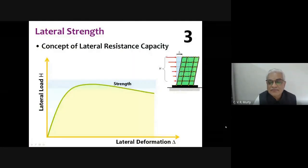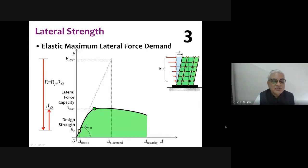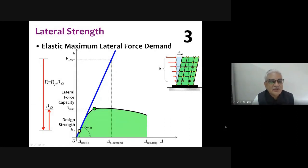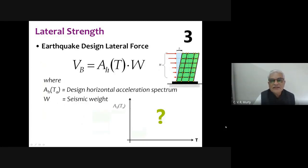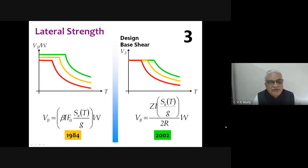The third virtue is strength. The Indian standard introduced the concept of the response reduction factor R. The design force is obtained by performing linear structural analysis and dividing the result by R to get the design force. This is reflected in the expression V_B = A_h × W, where A_h is the horizontal spectral acceleration coefficient and W is the seismic weight. In the 1920s A_h was a constant flat line of 0.1W; in 1962 it was constant up to a certain natural period and then dropped; in 1984 different soil classes were introduced; and in 2002 a unified benchmark was set with the response reduction factor.